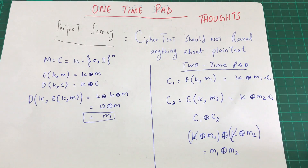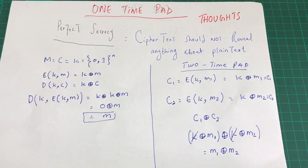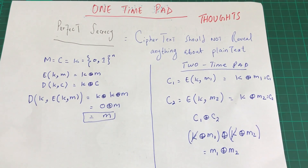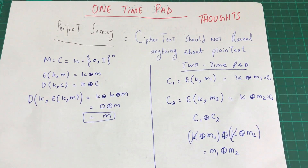One-time pad is a perfect cipher with perfect secrecy, but a practical limitation is that if you want to send a one-gigabyte file, you need a one-gigabyte key, which takes time to transmit over a network. Those are the final thoughts on one-time pad. If you have any questions, please leave them in the comments, and don't forget to subscribe to the channel.